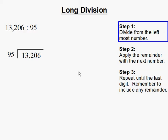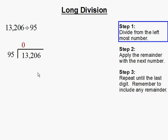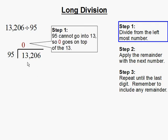Step 1, divide from the leftmost number. The leftmost number right here is 1, so we're going to divide 95 into 1. And 95 cannot go into 1, so 0 goes on top of the 1. Then we move to the next number which is 13. And 95 cannot go into 13, so 0 goes on top of the 13.